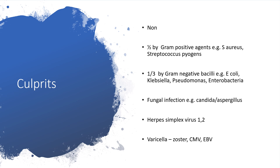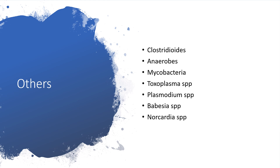Regarding culprits: sometimes there could be none. In about 50 percent of cases, it could be gram-positive agents like Staphylococcus aureus or Streptococcus pyogenes. In one-third of cases, it could be gram-negative bacilli — for example, Escherichia coli, Klebsiella, Pseudomonas, and Enterobacteria. Fungal infection such as Candida or Aspergillus is also possible. Herpes simplex virus 1 and 2 may be involved, as well as Varicella zoster, cytomegalovirus, or Epstein-Barr virus. Other culprits include Clostridioides, anaerobes, mycobacteria, Toxoplasma, Plasmodium, Babesia, or Nocardia.